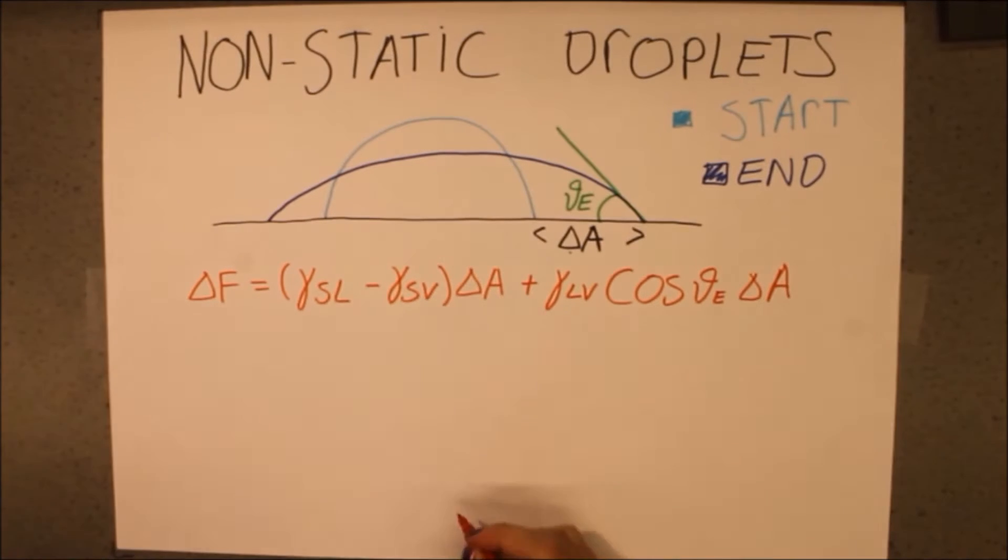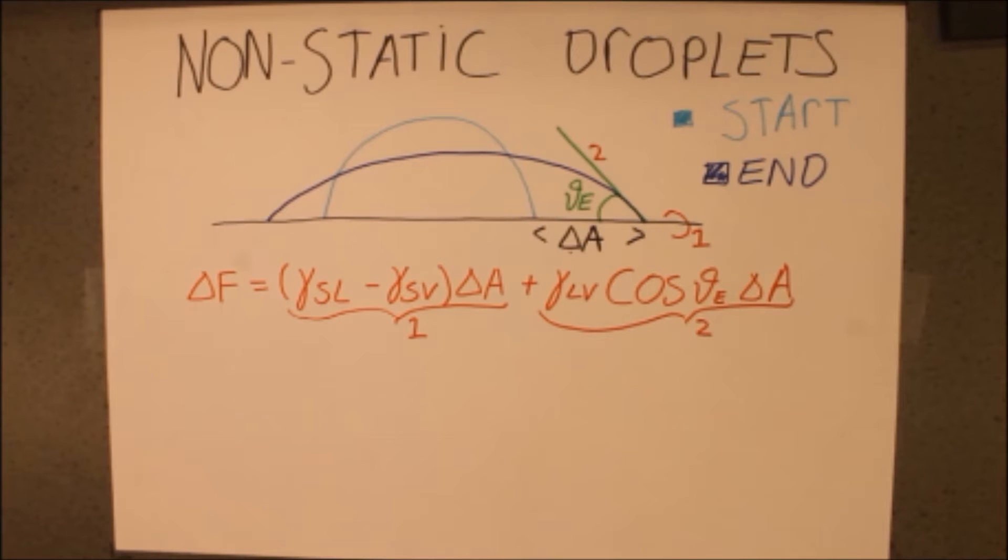This gives rise to two terms. The first one is due to the increase in solid liquid area and the decrease in solid vapor area, which is linear with delta A. The second term is due to the change in equilibrium angle, where a smaller angle will increase the free energy.